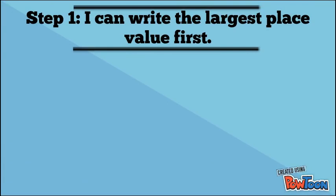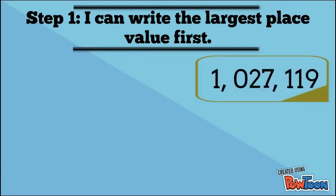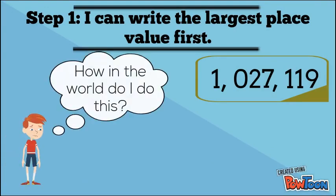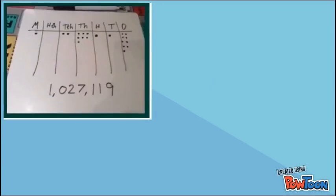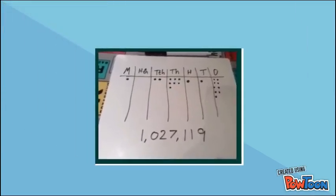Step 1: I can write the largest place value first. Here is the number that we have to try and write in words. Let me show you — we can use something we created in a previous video. This is an image we drew of a place value grid to help us find the value of each digit.